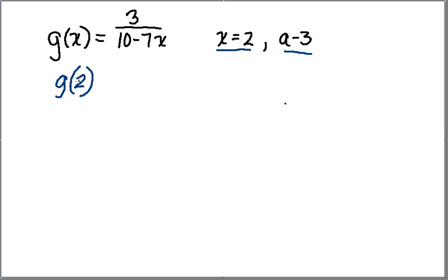And what that means is I go to my function, wherever I have an x, here, I'm going to plug in 2. So in this case, it's going to be equal to 3 over 10 minus 7 times 2, right?